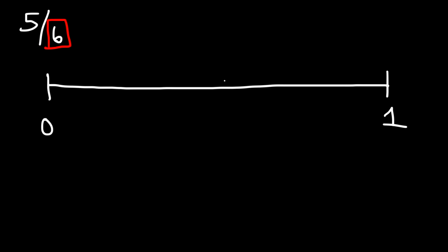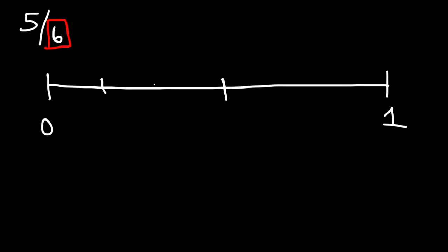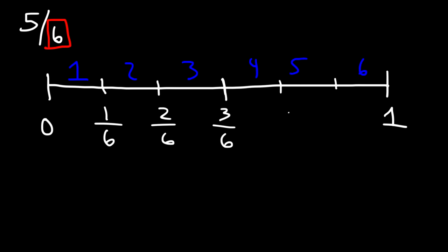Since 6 is even, the first mark I'll put is right in the middle, giving two equal spaces. Now I need to break each portion into three equal spaces — one, two, three on each side. Now I have a total of six equal spaces. So the fractions in order are 1 over 6, 2 over 6, 3 over 6, 4 over 6, 5 over 6, and 1 is 6 over 6. Five over 6 is located right here.